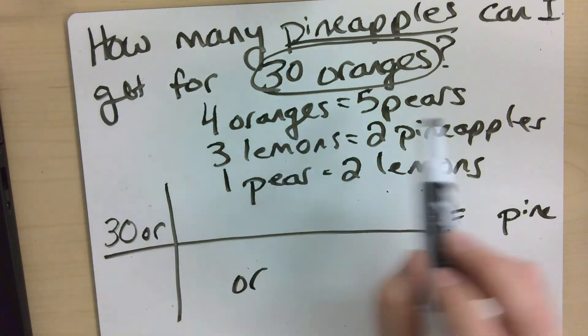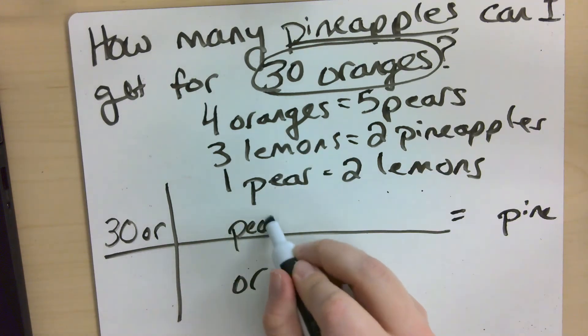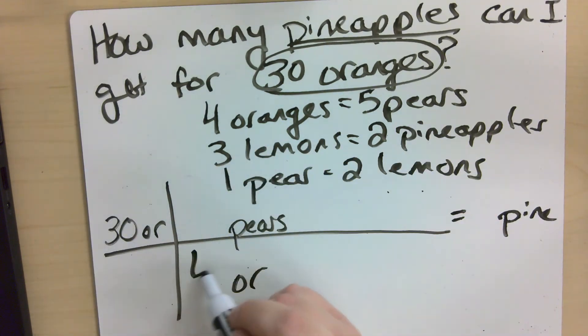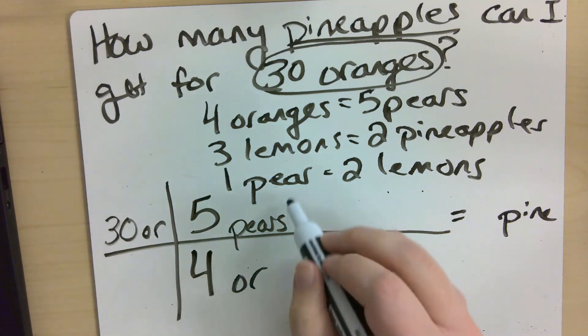All right, so oranges, I can convert to pears. Now, I don't know how I'm going to get to pineapples yet, but it doesn't really matter. I'm just going step by step until I get to my answer. So based on this conversion factor, I know that I have four oranges for every five pears.